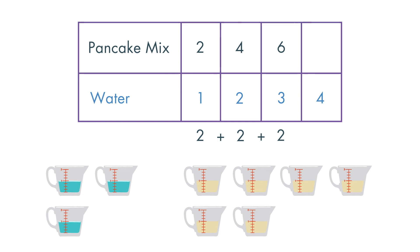How many cups of pancake mix will we use for 4 cups of water? We will need to use 2 plus 2 plus 2 plus 2 cups of pancake mix for 4 cups of water. That is 8 cups of pancake mix.